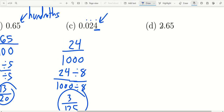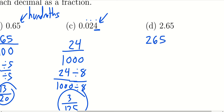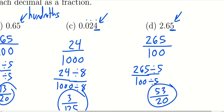We also have a mixed number decimal — 2.65. It works the same way: throw away the decimal point to get 265 as the numerator. The last decimal digit is in the hundredths position, so we put 265 over 100. The GCF is 5: 5 goes into 265 fifty-three times, and into 100 twenty times, so the final answer is 53 over 20.